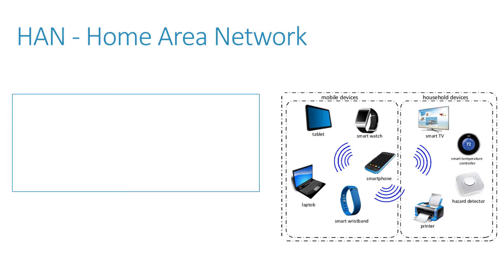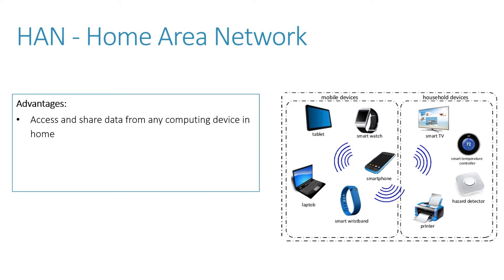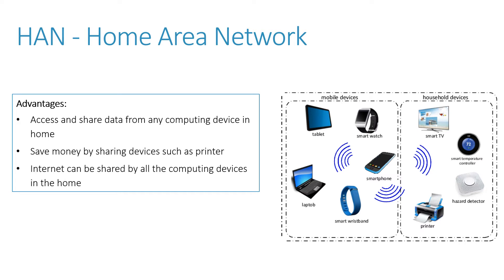Next, we've got a HAN, which stands for Home Area Network. Here I've got a picture of a typical HAN, and you can see it's got a lot more devices connected. You can even have smart home devices connected into your HAN. The advantages are that you can access and share data from any computing device in the home. You can also save money by sharing devices like a printer, so everybody in the house can use one printer and connect to it. And the internet can be shared by all the computing devices in the home.